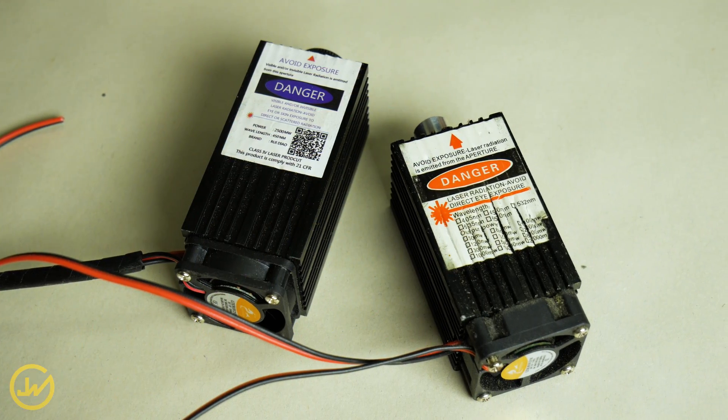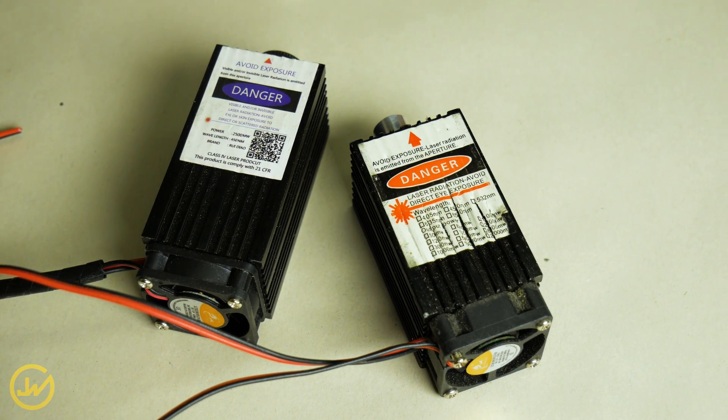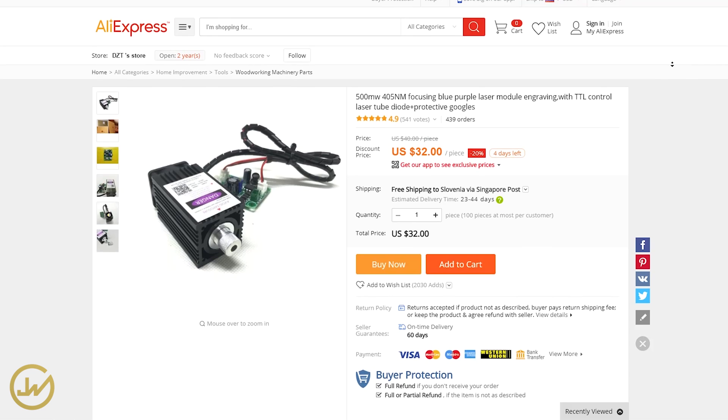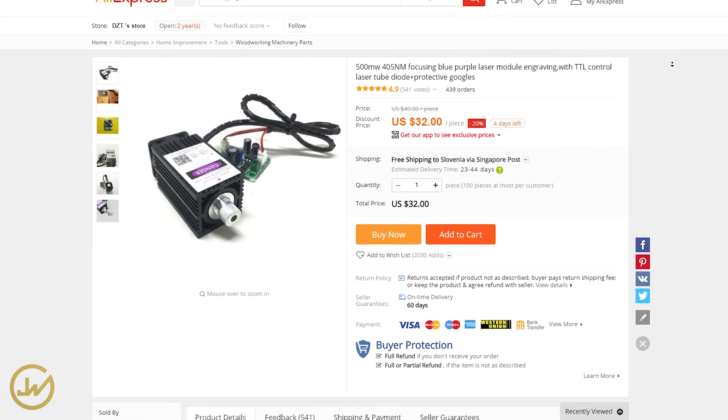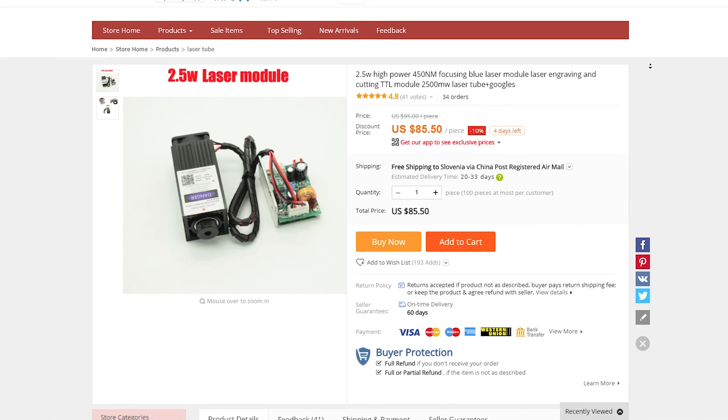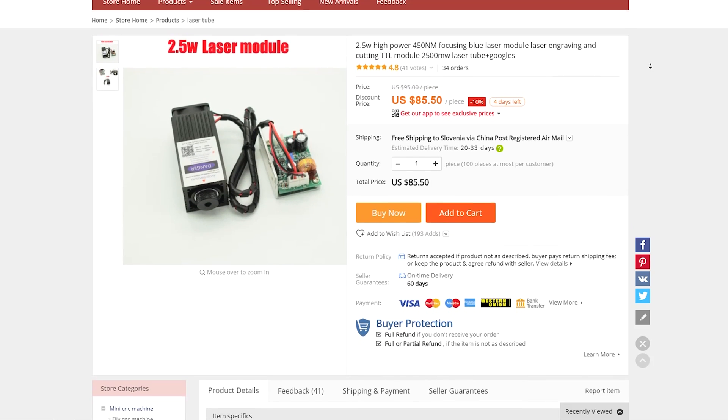We're gonna start this project by choosing the right laser module for our needs. Starting with a 500mW laser you will only be able to engrave some shapes into wood, plastic or leather, and you can get that one really cheap for $35.